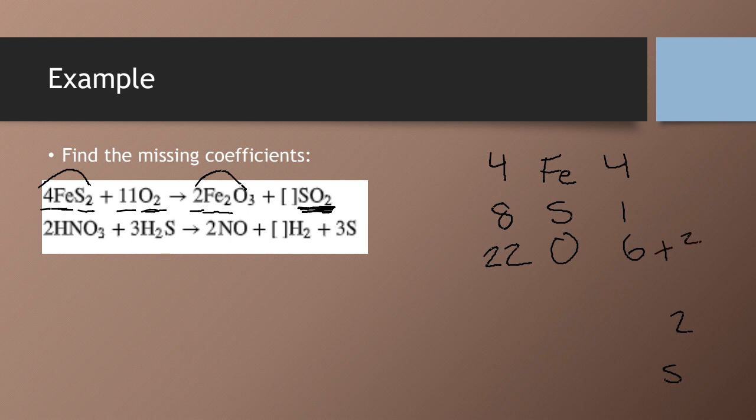Now, this we can multiply by something to get what we need. Notice we need to have eight sulfurs, and so if we put an eight here, let's see what happens.